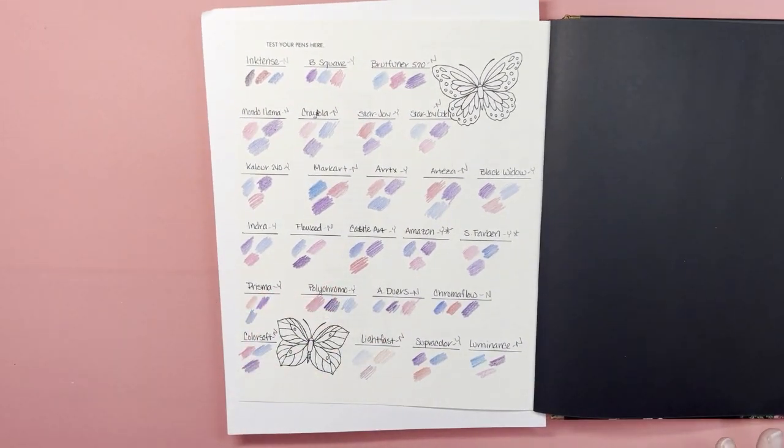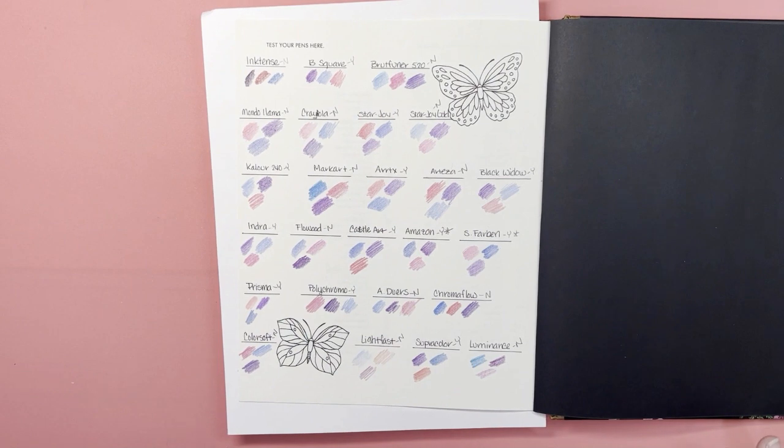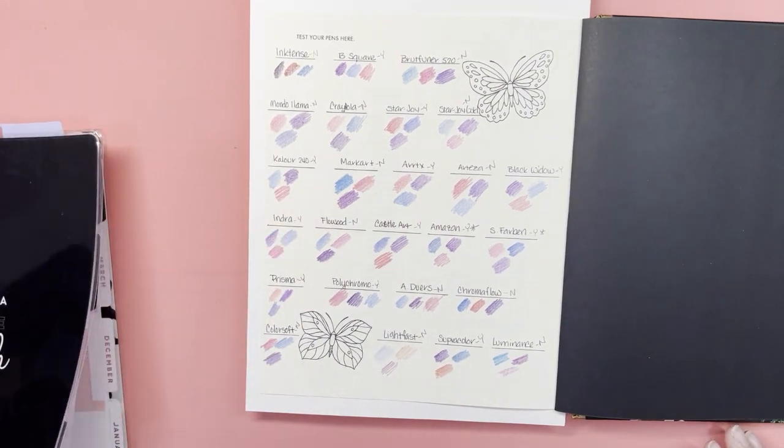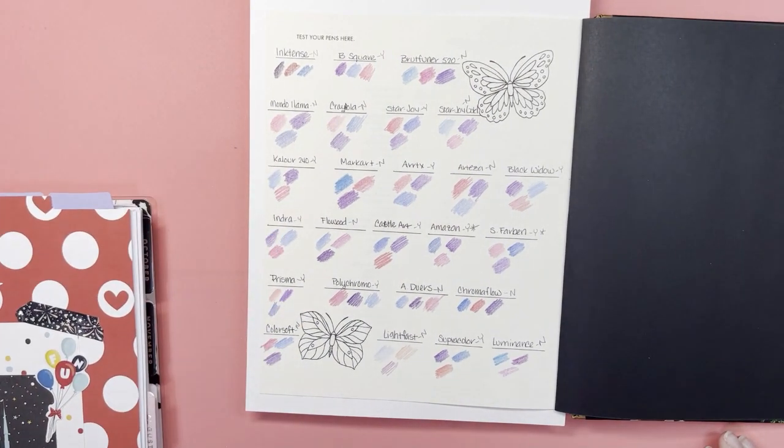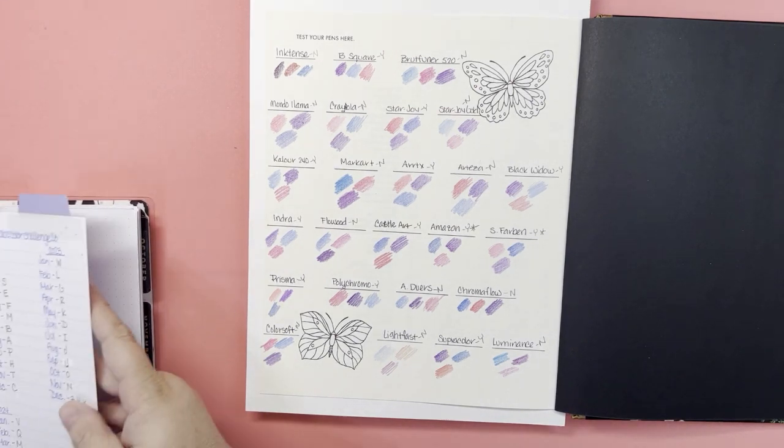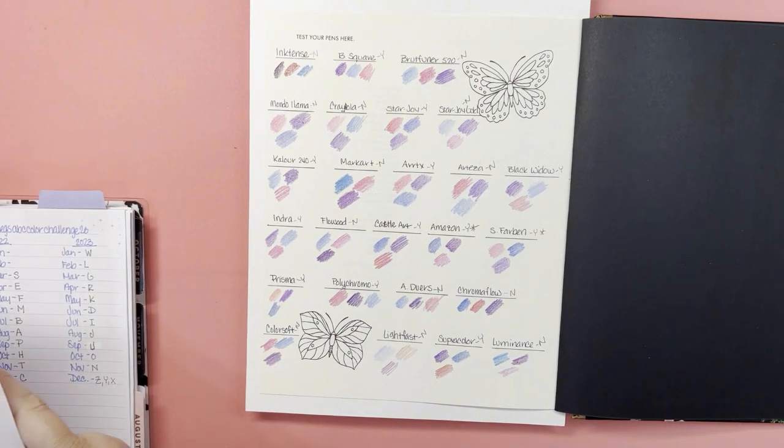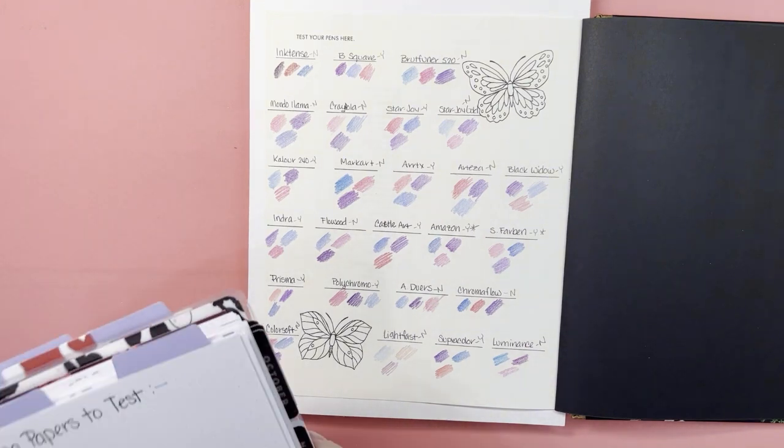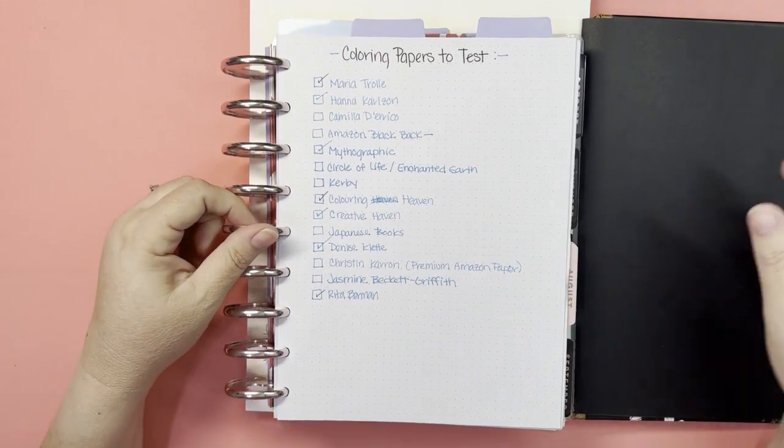All right, so there we have it. That is what we have for our Maria Trolle pencil versus paper test. Now I was going to pull out, I got my little journal here off to the side, and I was gonna go over what papers so far I have left to test.